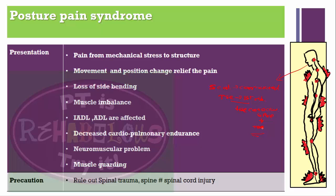Patient presentation for postural pain syndrome: pain from mechanical stress on structures, movement and positional changes relieve pain, loss of side bending, muscular imbalance, activities of daily living are affected, and decreased cardiopulmonary endurance — because accessory respiratory muscles are working more. Neuromuscular problems and muscle guarding are present. We have to rule out spinal trauma, spinal fracture, and spinal cord injury; patients with spinal cord injury may have cauda equina lesion.